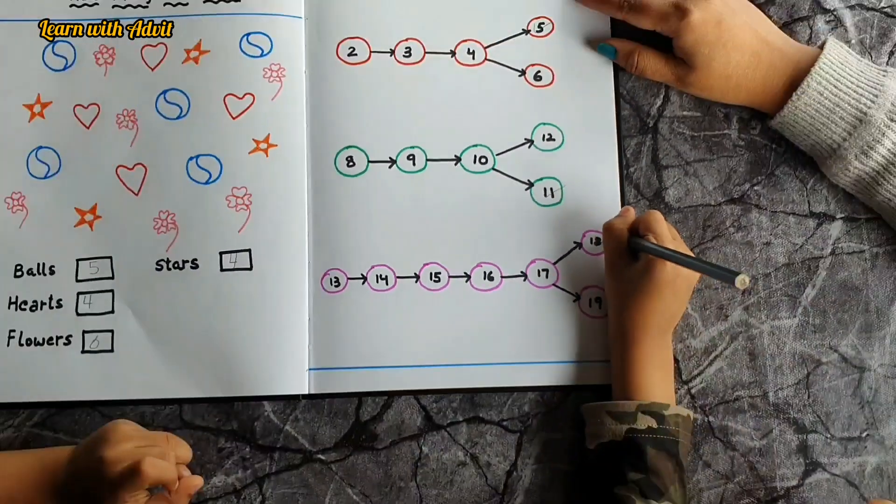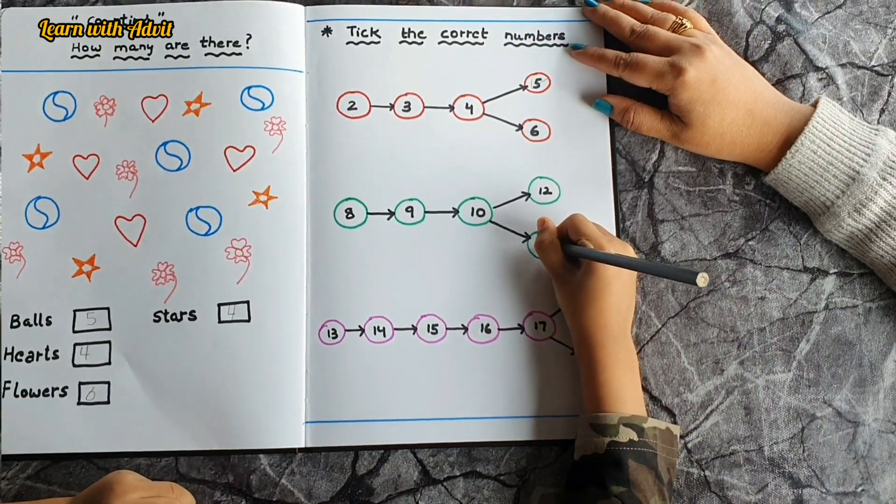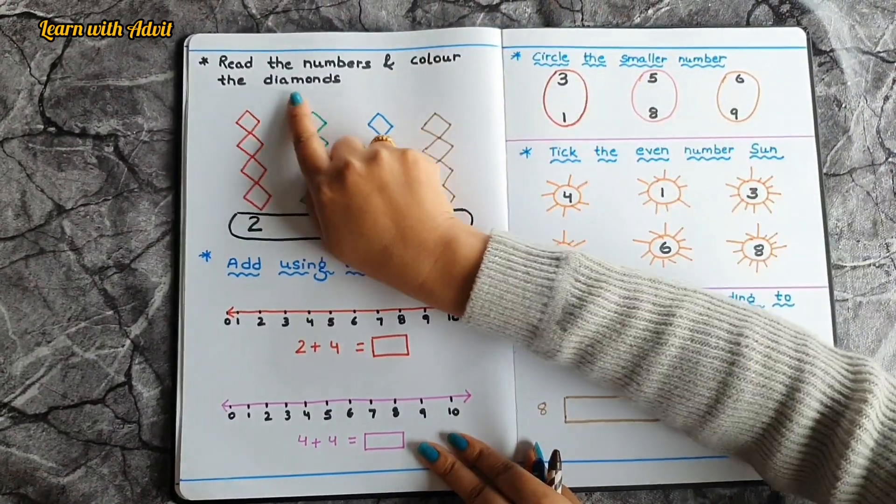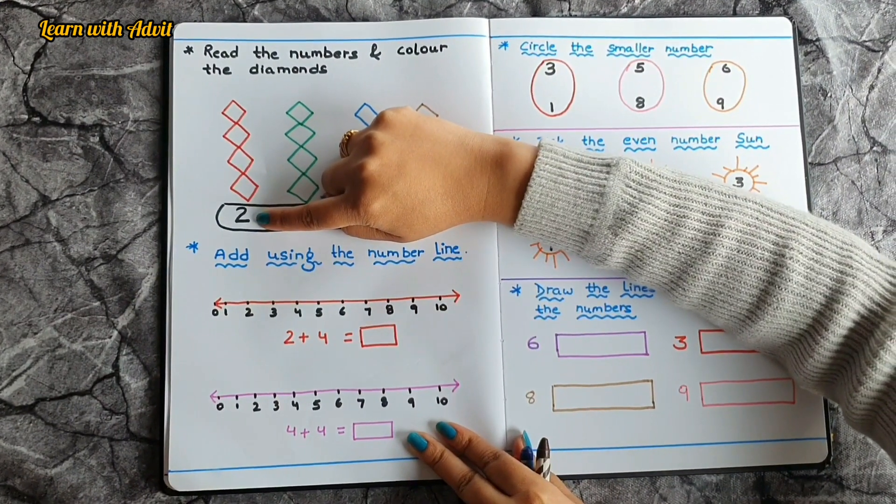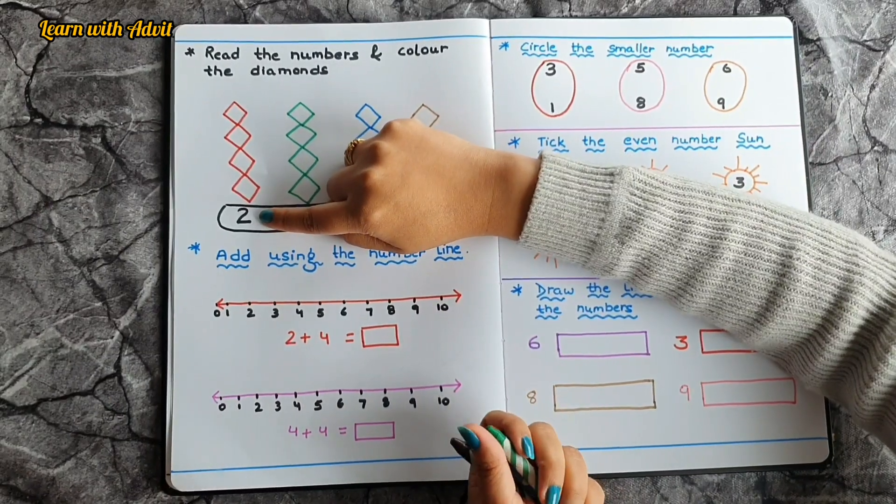This one is good. Very good. In this sheet, what you have to do is read the numbers and color the diamonds. You have to look carefully at the number and you have to color. So which number is this?